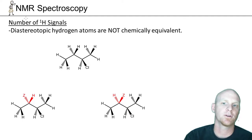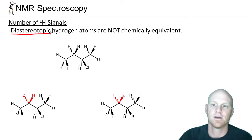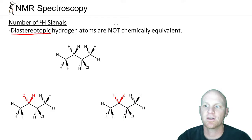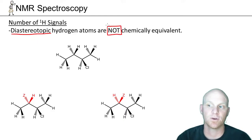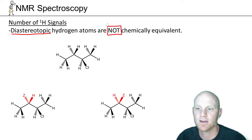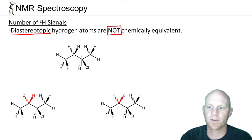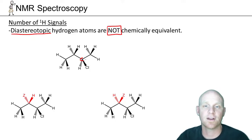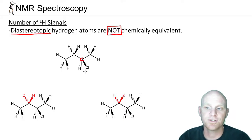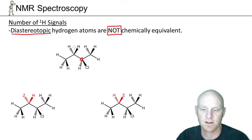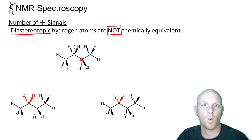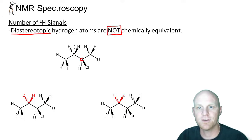The last vocab term is diastereotopic. Diastereotopic hydrogens are not chemically equivalent and will give rise to different signals in the HNMR spectrum. On this molecule there is already a chiral center — this carbon is bonded to a hydrogen, a chlorine, a methyl, and an ethyl — four different groups. The most common example of diastereomers is when you have more than one chiral center, one in the same configuration and one in opposite configurations.